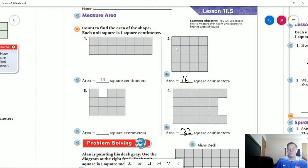So number two, we have four rows of four. That would give us 16 square centimeters, or we could just count up each individual block.